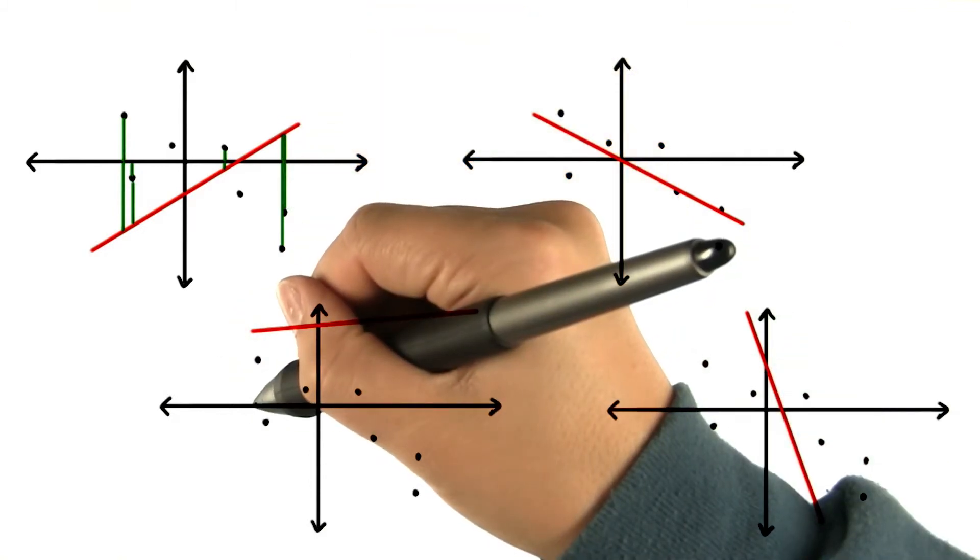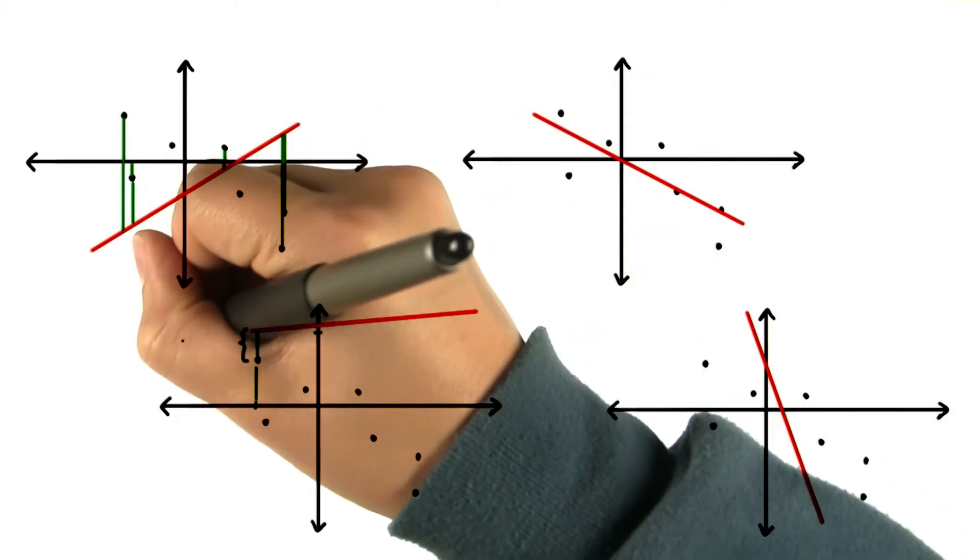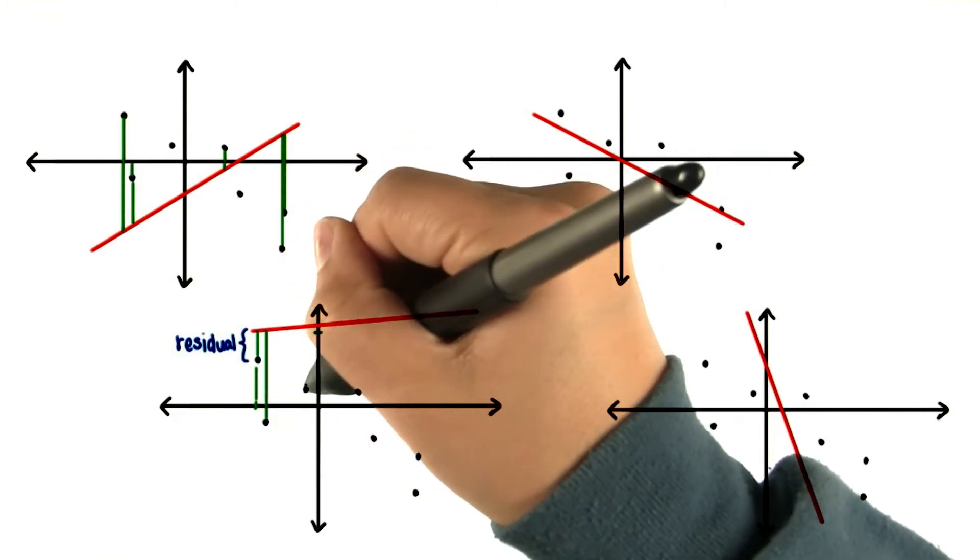The same with this. The expected value for this value of x is way up here. So this residual actually isn't too bad, but the amount of the residual gets worse and worse as we continue.